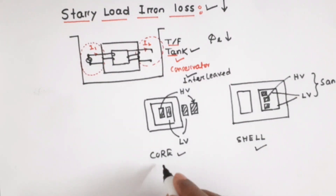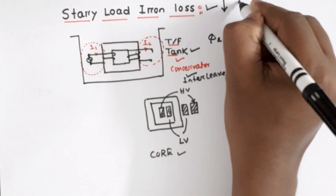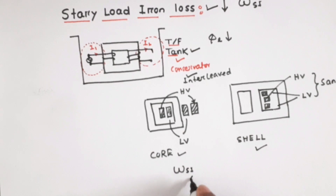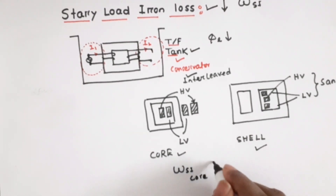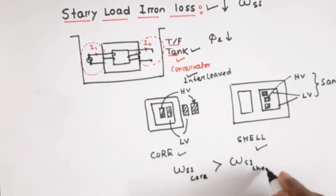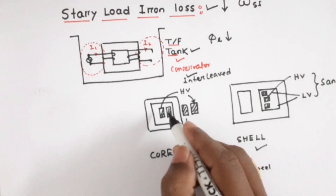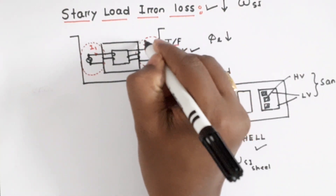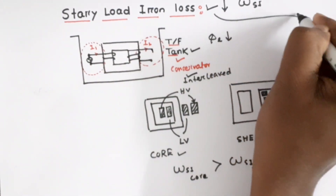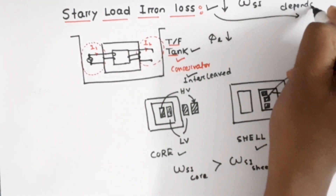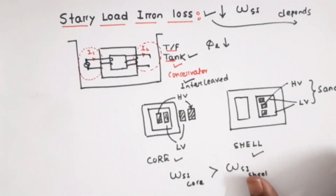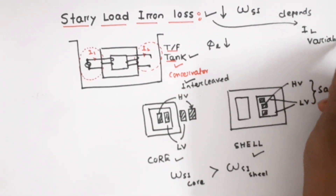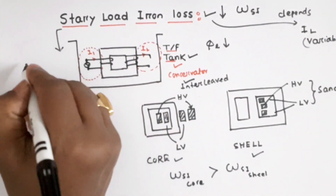In the core type transformer, the stray load iron loss W-si will be greater than the stray load iron loss in the shell type transformer, since the leakage flux is more in the core type, therefore more stray load iron loss. The stray load iron loss depends upon the current IL. Since load current is variable and depends upon the type of load, stray load loss is also a variable parameter.